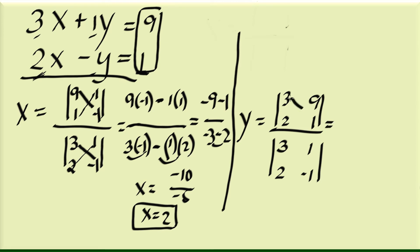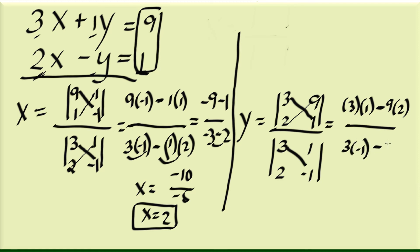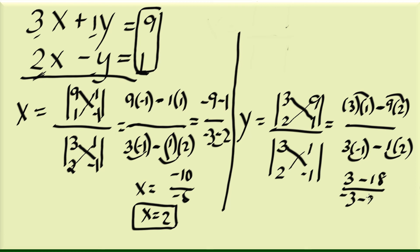For the y side, we multiply 3 and 1, minus multiply 9 and 2, over the denominator: negative 3 times 1 minus 1 times 2. That gives 3 minus 18 over negative 3 minus 2. So that is negative 15 over negative 5, which is positive 3 — that is your y value.